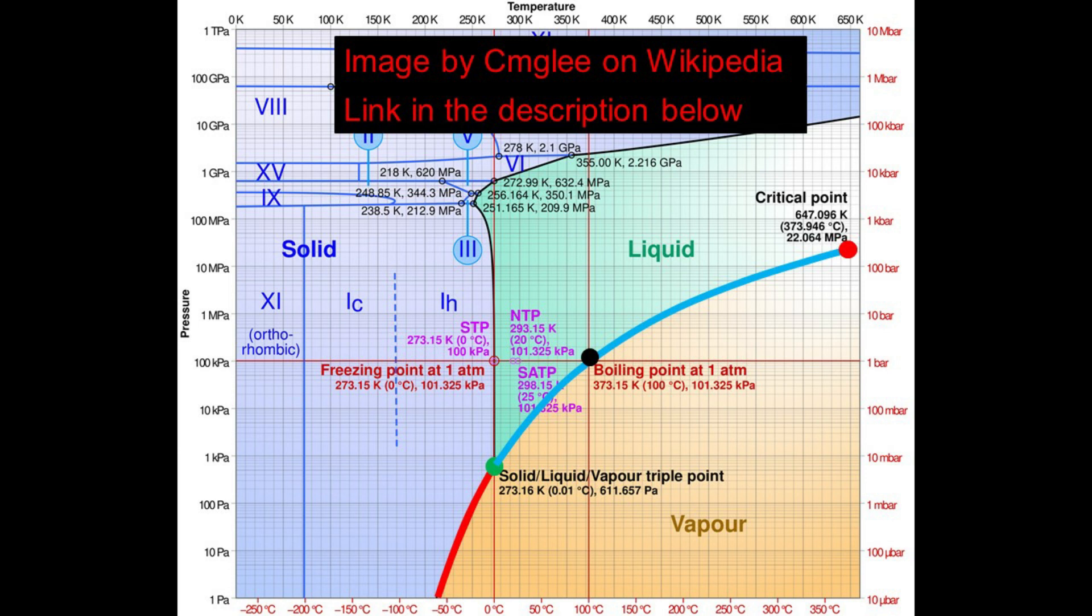The green dot represents the triple point where melting begins. The blue line represents the entire evaporation process, and we notice the black dot on it, which is the boiling point of water at normal atmospheric pressure.